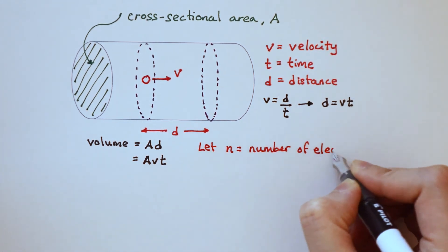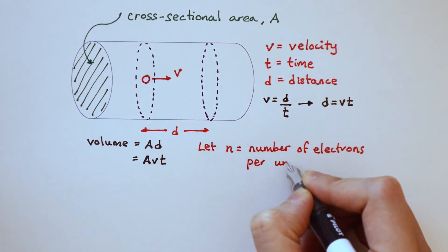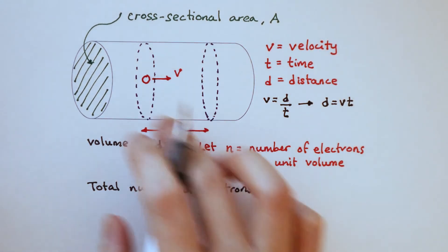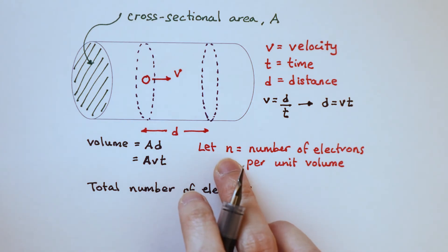So if we let n be the number of electrons per unit volume, the total number of electrons in this section is the volume multiplied by n.